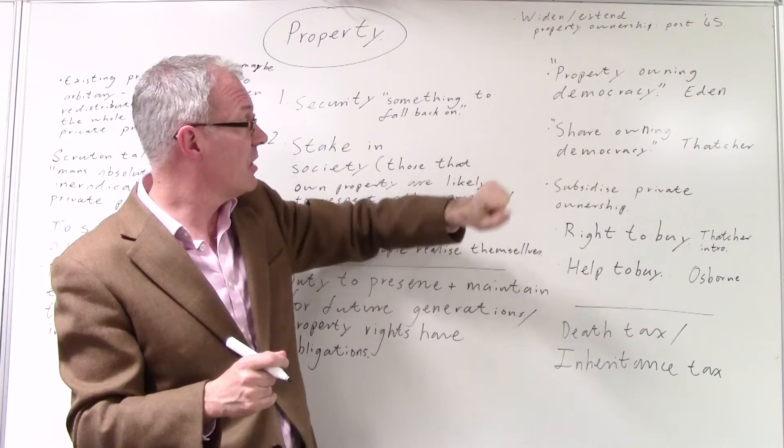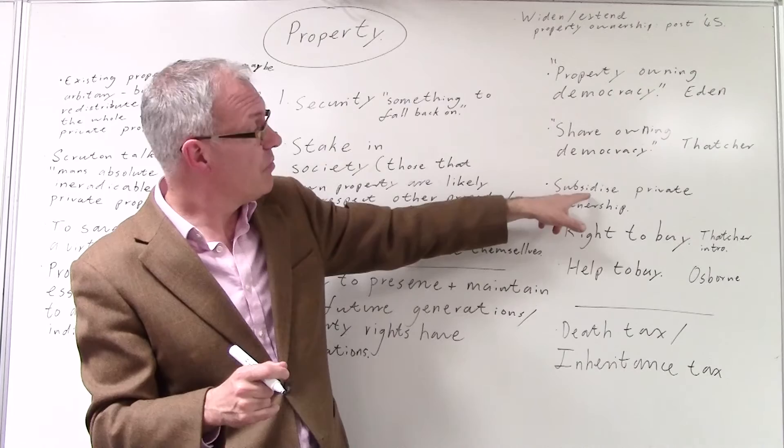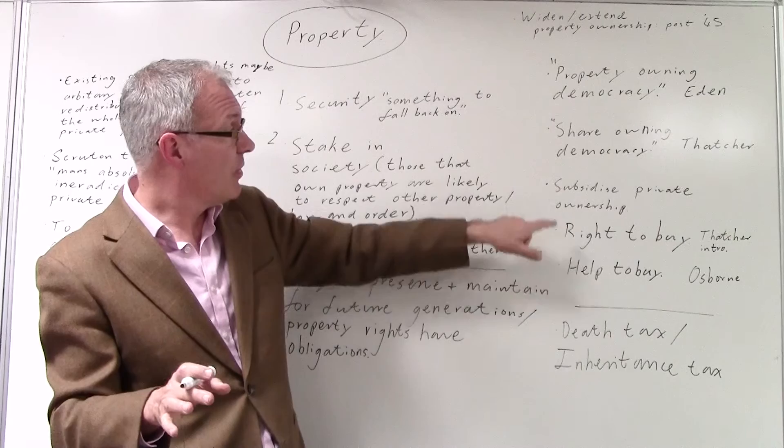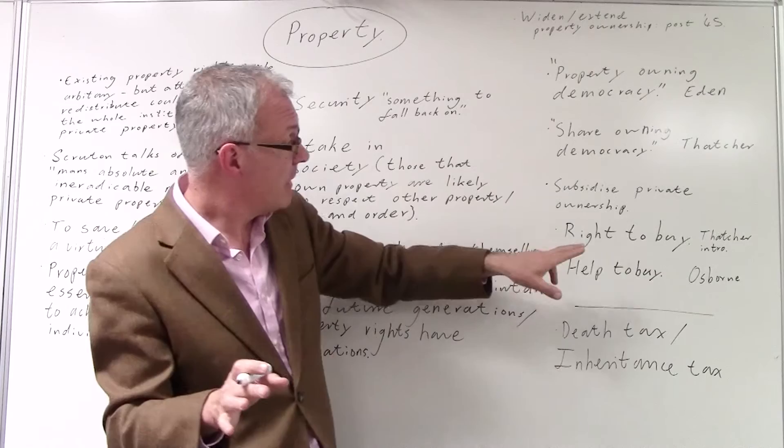And of course, through much of the post-war period, there was a subsidy for private ownership of property, which the conservatives are particularly keen on, and Labour perhaps didn't dare get rid of. Of course, it was eventually got rid of in the late 80s. But a key aspect of Thatcherism was perhaps the right to buy.